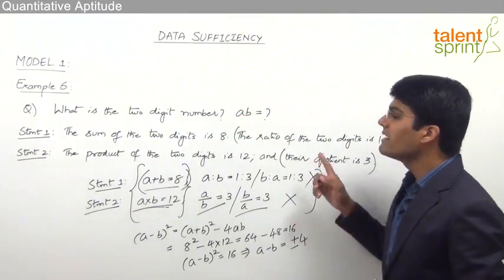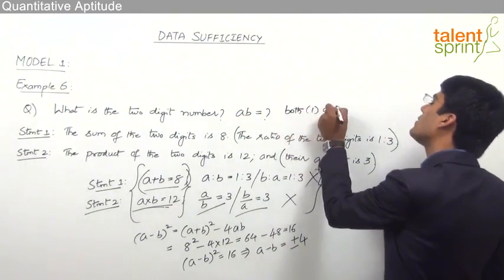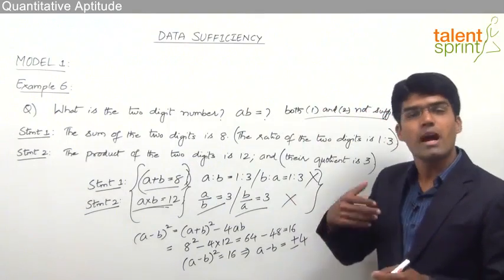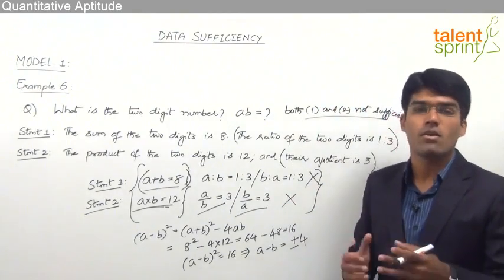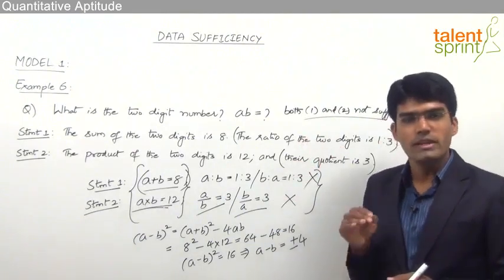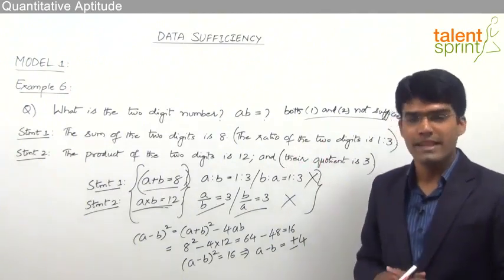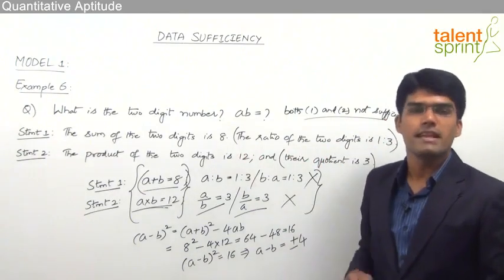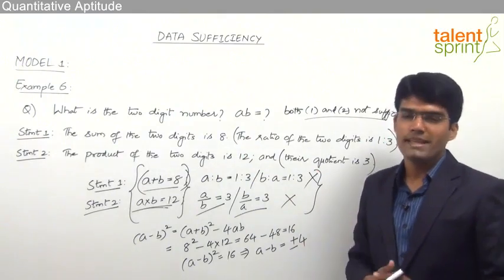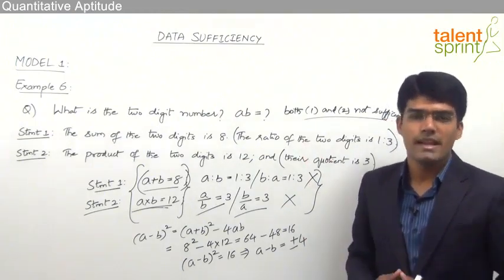So the answer has to be option 4 — even both statements together are not sufficient to answer the question. This is how some questions, though they appear easy, have a twist and lead to a wrong answer. We have to be careful in data sufficiency and not take anything for granted. Just because the ratio is given as 1 to 3, we cannot assume A to B equals 1 to 3 — both possibilities exist. Only when the proper information is explicitly given should you decide and come to a conclusion.